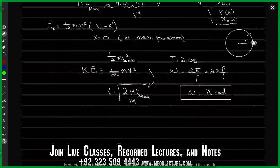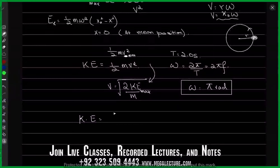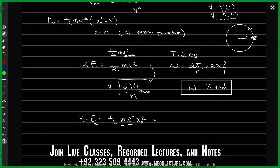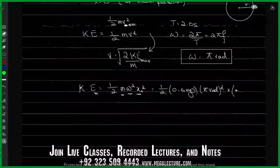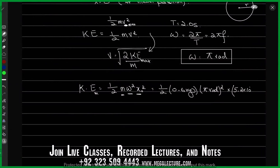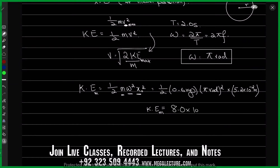Now we can find the maximum kinetic energy, which is half m omega squared x naught squared. I have omega equal to pi. I have x naught, the amplitude of the oscillation, and the mass. Mass is 600 grams, which is 0.6 kilograms. Omega is pi radians squared. Multiplied by the amplitude 5.2 centimeters, written as 5.2 times 10 to the power minus 2 meters. Doing the math gives a maximum kinetic energy of 8.0 times 10 to the power minus 3 joules.